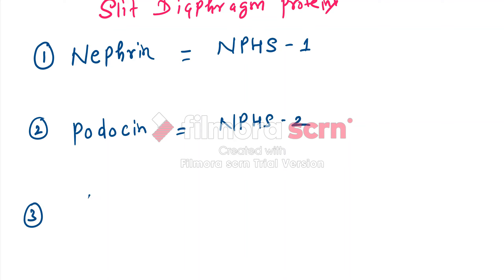The third is alpha-actinin. These are three proteins which form slit diaphragm.